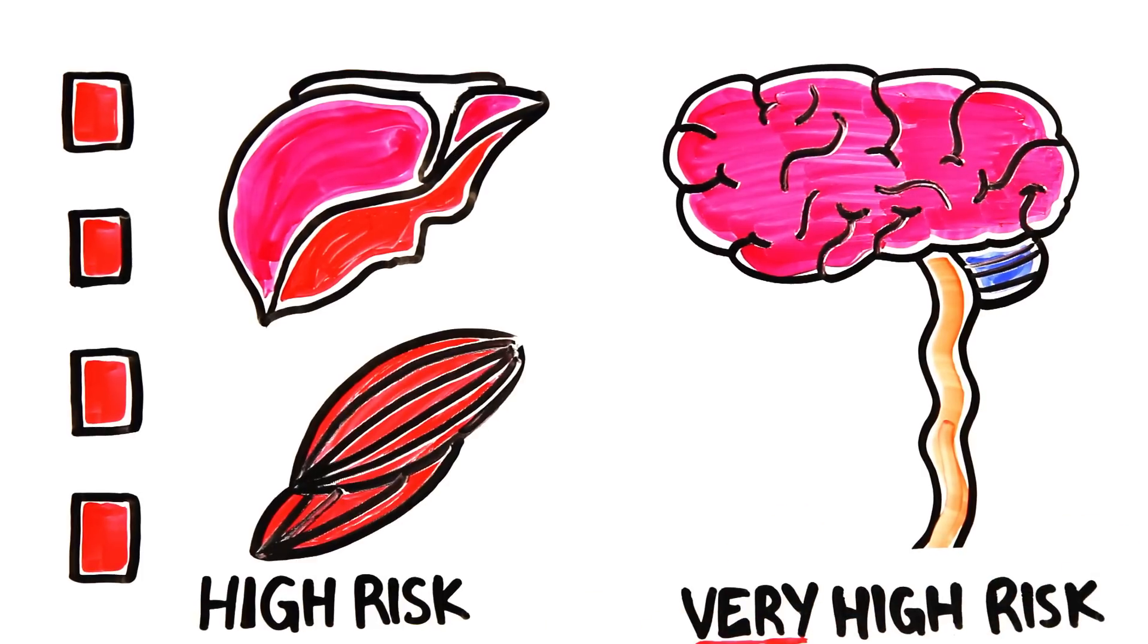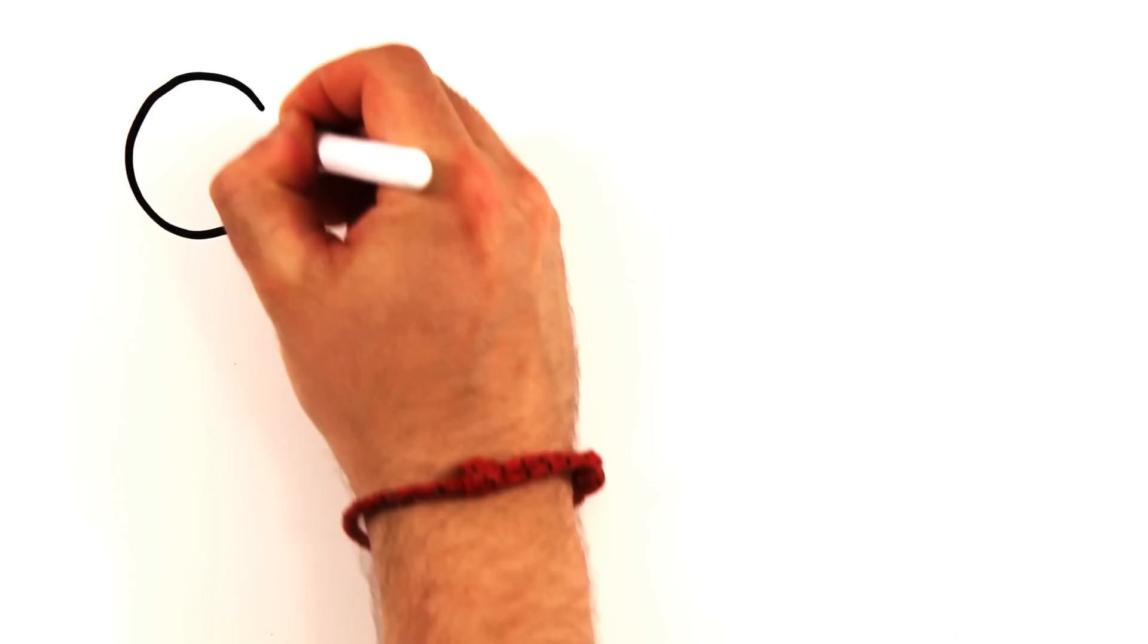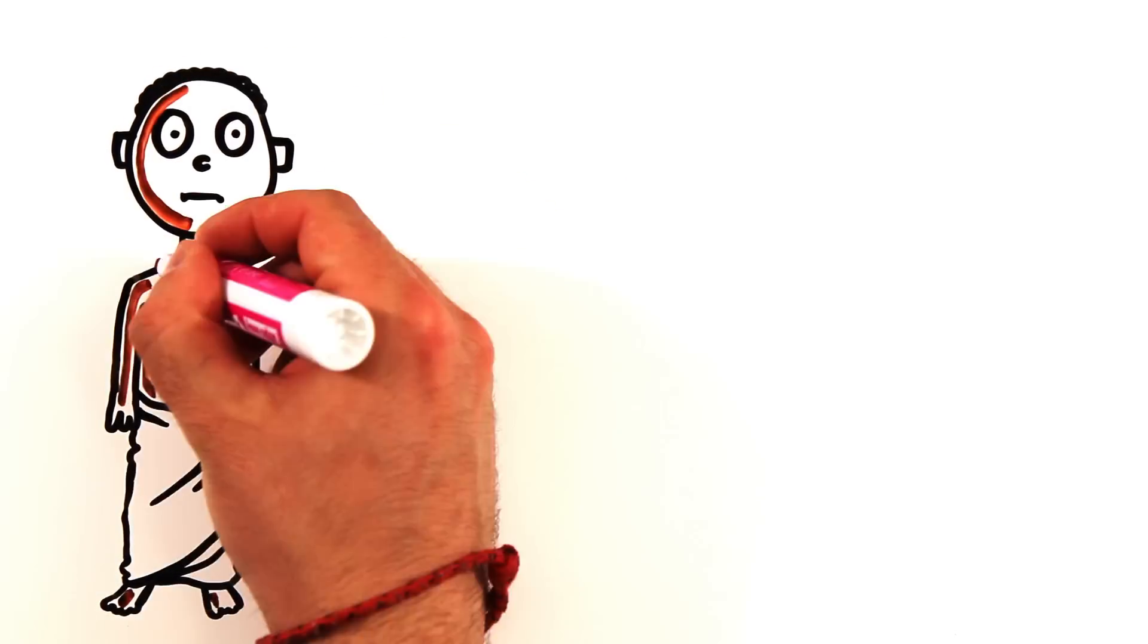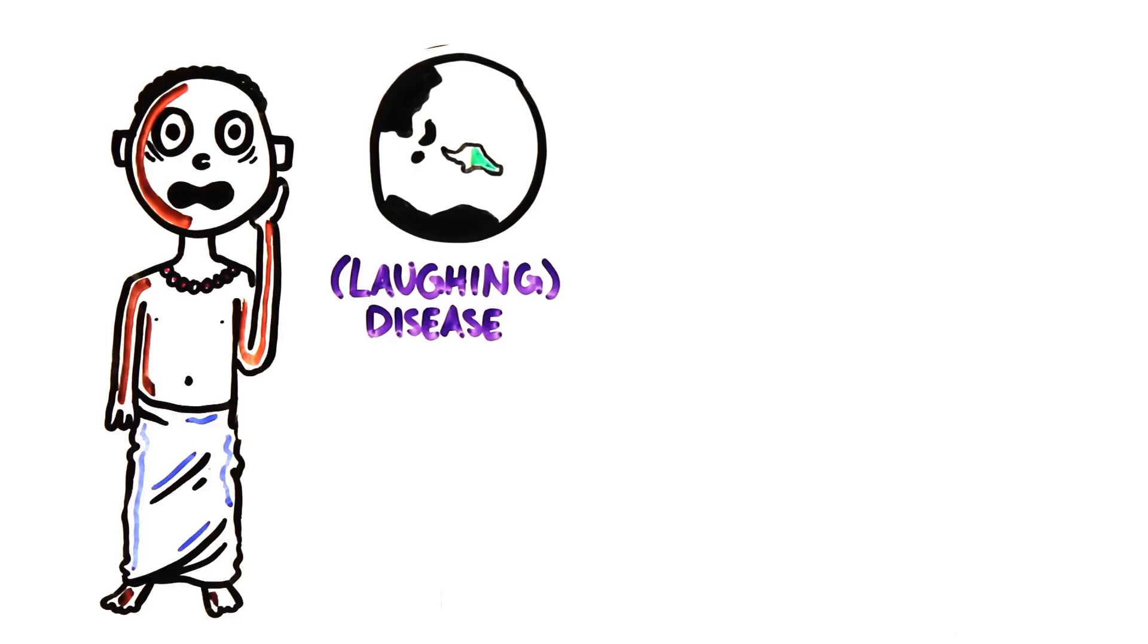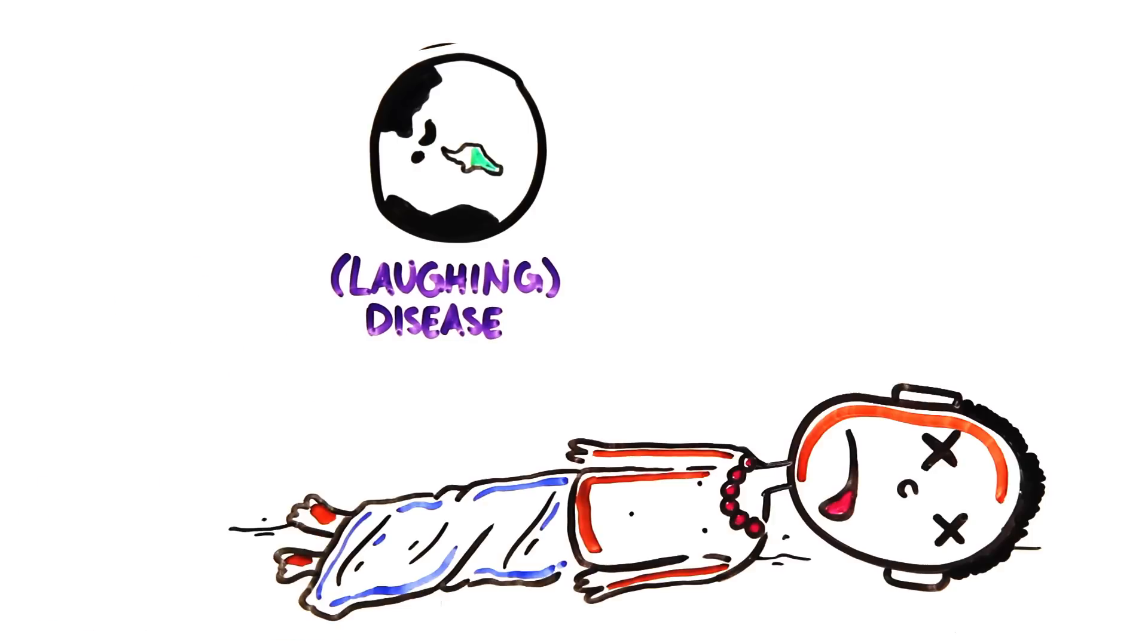Eat the brain, and that risk goes much higher. In the 1950s, researchers discovered that several members of the Fore people, a tribal group in Papua New Guinea, were suffering from a disease called Kuru, or laughing disease, which caused those infected to lose control of their emotions, then bodily functions, eventually succumbing to death.